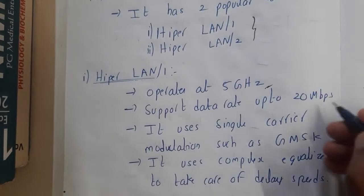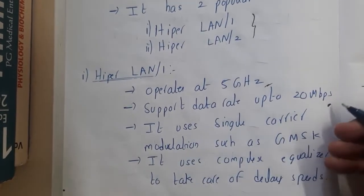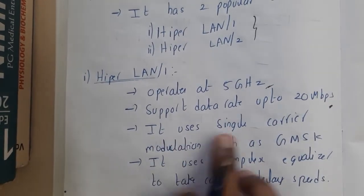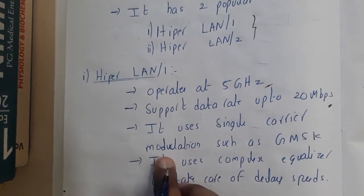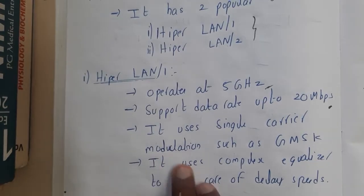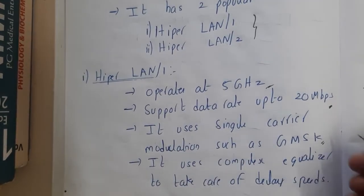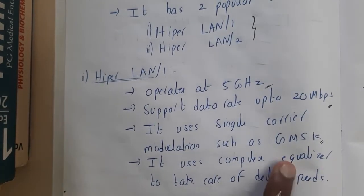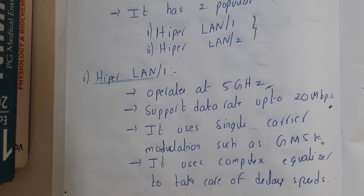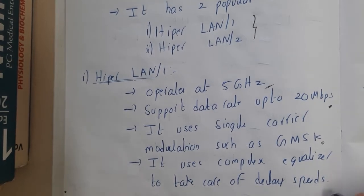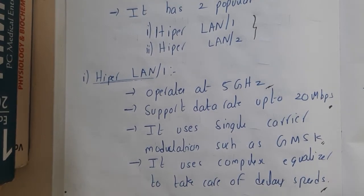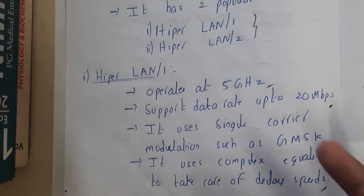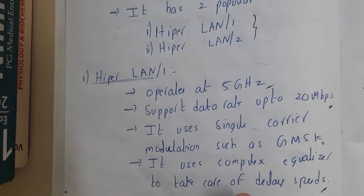HiperLAN 1 operates at 5 GHz and supports a data rate of up to 20 Mbps. It uses single carrier modulation such as GMSK, and uses complex equalizers to handle multipath delays.